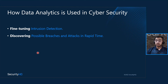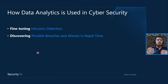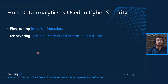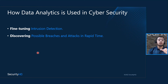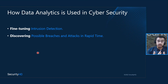Second is discovering possible breaches and attacks in rapid time. Once we have the data, we form a pattern out of it, which can help with close-time analysis to discover possible breaches in the future. For example, in 2018, an organization took almost 196 days just to detect one breach and another 69 days to mitigate it. Any hacker can have malware enter an organization's network, camouflage it, and it can remain undetected for years, stealing vital information. This is a very important result we can achieve with data analytics.